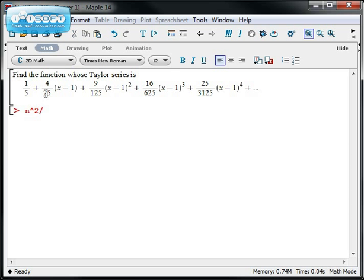The denominators are powers of 5: 5, 5 squared, 5 cubed, 5 to the 4th, so maybe the bottom looks like 5 to the n.